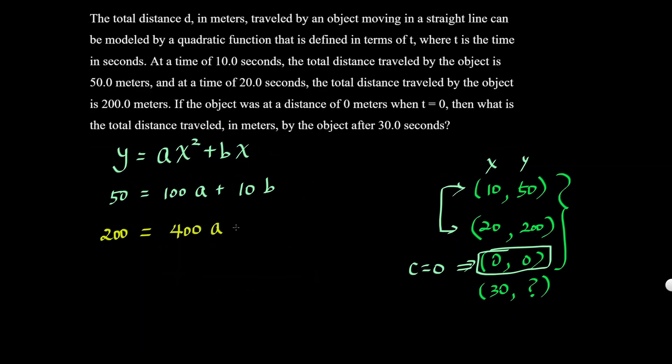We could get rid of the b by multiplying the top equation by 2, then we get 20b. If we subtract using the elimination method, we could get rid of the b. So 2 times 50 is 100, 2 times 100a will be 200a, 2 times 10b is 20b.